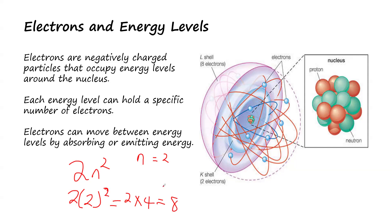So that is why here we have a maximum of 8 electrons in the L shell. Each energy level can hold a specific number of electrons. In the case of K shell, n is equal to 1. So we have 2 into 1² — 1 squared is 1, so 2 times 1 is 2. That is why we have 2 electrons in the K shell.